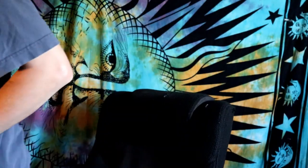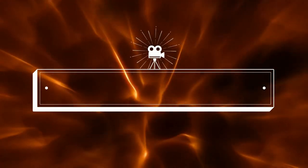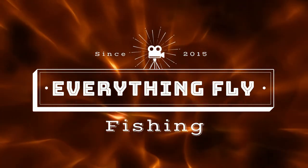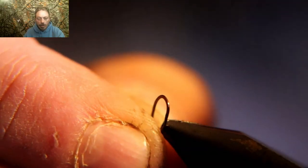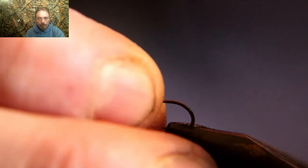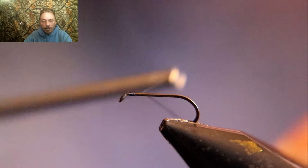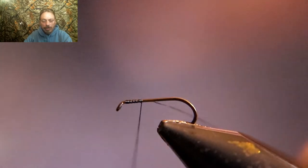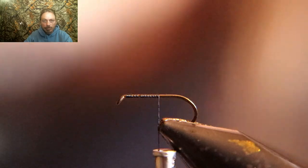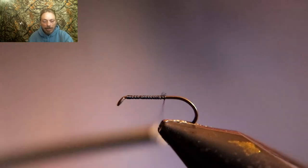Start this fly by debarbing the hook. This is a standard size 14 dry fly hook. I'm going to use 70 denier black thread. I like that really fine thread so it doesn't build up bulk. We're going to tie that all the way back to the bend of the hook.